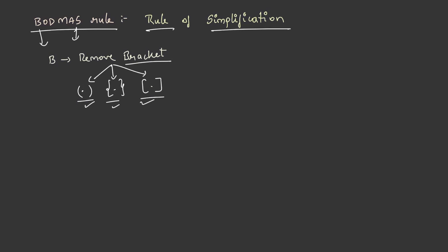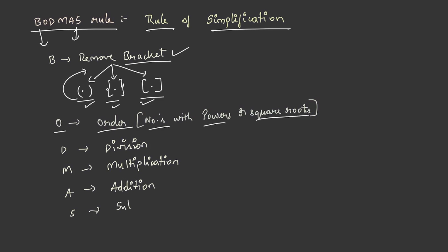Then O stands for order. After simplifying the digits in the bracket, we need to look for numbers with powers or square roots and simplify them. That is known as order. And then comes the division. Then we need to look out for any digits with multiplication, and this is followed by addition and finally subtraction. This is what each digit of BODMAS means, the order to be followed while solving the simplification questions.